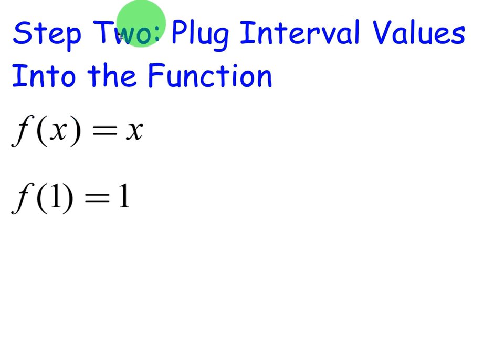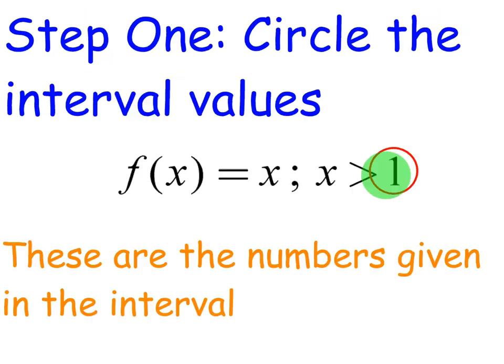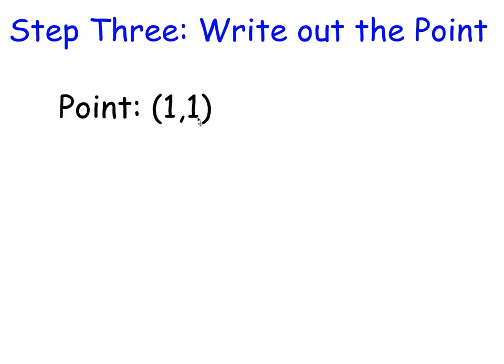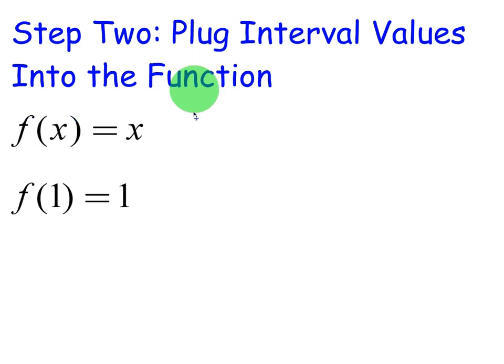Step 2 is to plug those interval values into the function. So I'm going to take 1 and plug it into my function, which is just x in this case. f of 1 equals 1. It's really that simple. It's not always that simple, but in this case it is. So my point is going to be 1, 1.